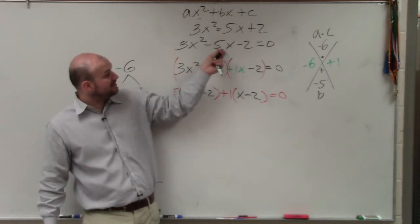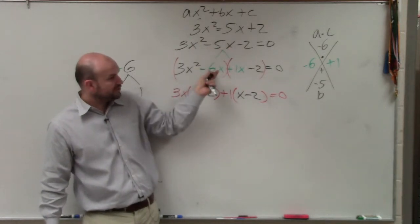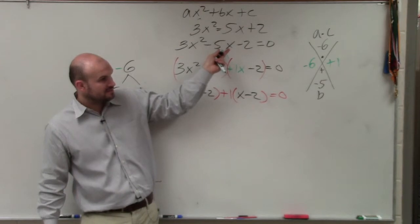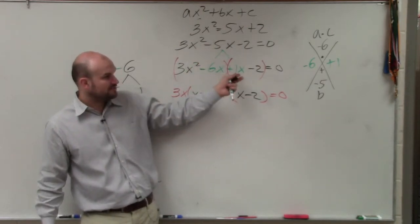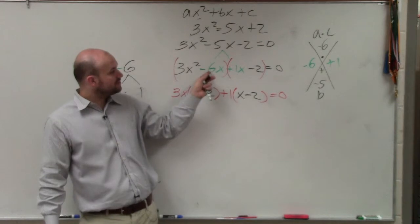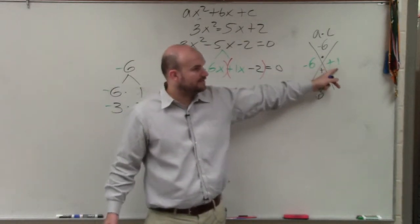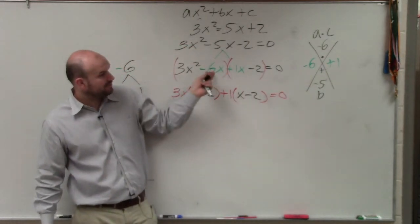All I did, do you see what I did from here to here? All I did, do you agree with me that negative 6x and 1x is the same thing as negative 5x? All I did was rewrite negative 5x as negative 6x plus 1x. Why did I not do negative 3x and 2x? That equals negative 5x, right? The reason why I chose negative 6x and positive 1x is because that was the values that I got from over here. OK? So I just rewrote those.